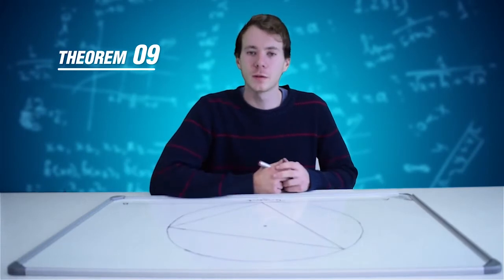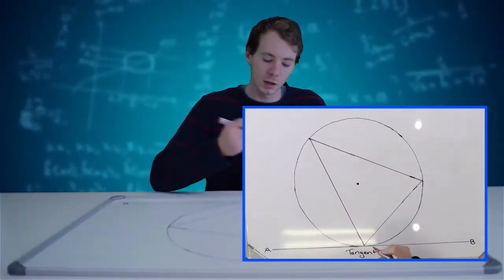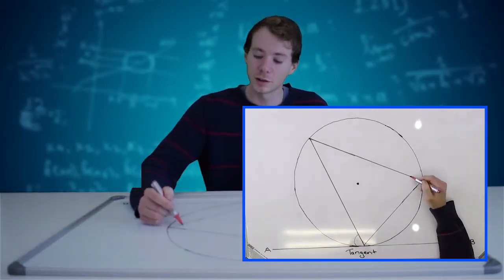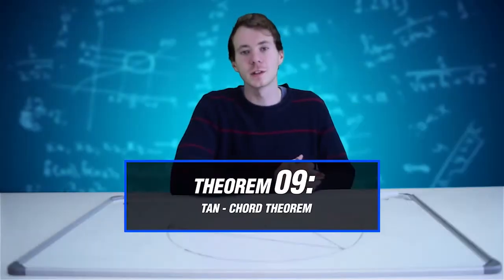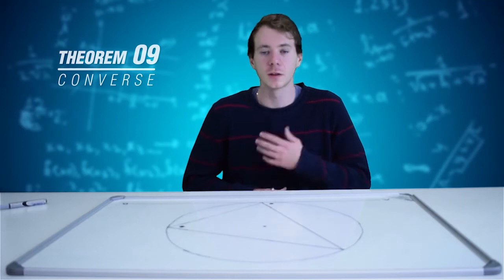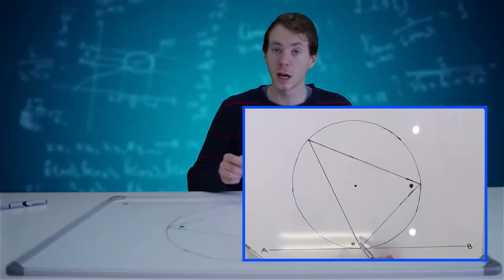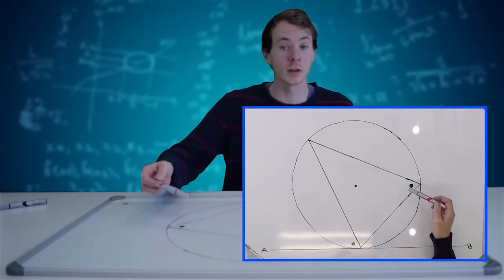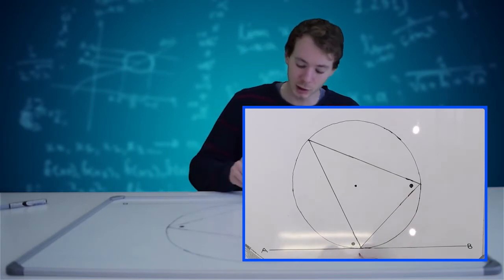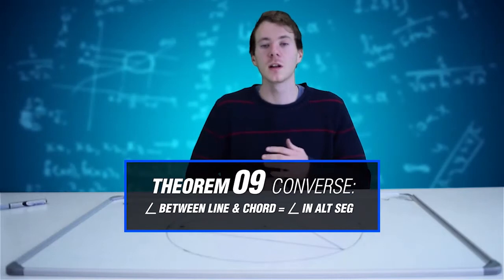Now we're on to our final theorem. Theorem 9 states that if we have an angle between the tangent and the chord from the point of contact, this angle is going to be equal to the angle in the alternate segment. The reason is: tan-chord theorem. Theorem 9's converse states that if I have an angle between a line and a chord, and this angle is equal to another angle subtended by that chord in an alternate segment, then this line AB is going to be a tangent. The reason is: angle between line and chord.